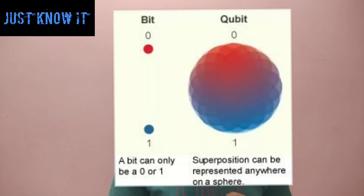Quantum computers use qubits. One qubit can be 0 or 1. If you see a photon or a nucleus, you can say it is a nucleus or a photon. In superposition, there are 2 states — a 0 state and a 1 state.